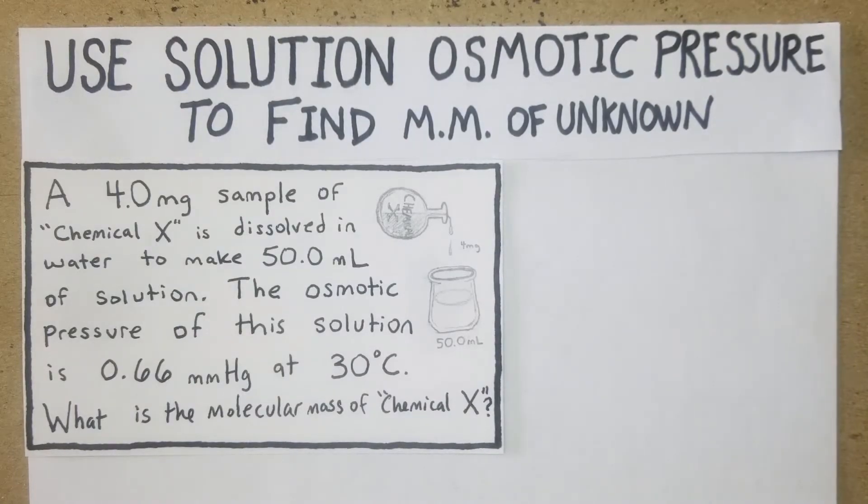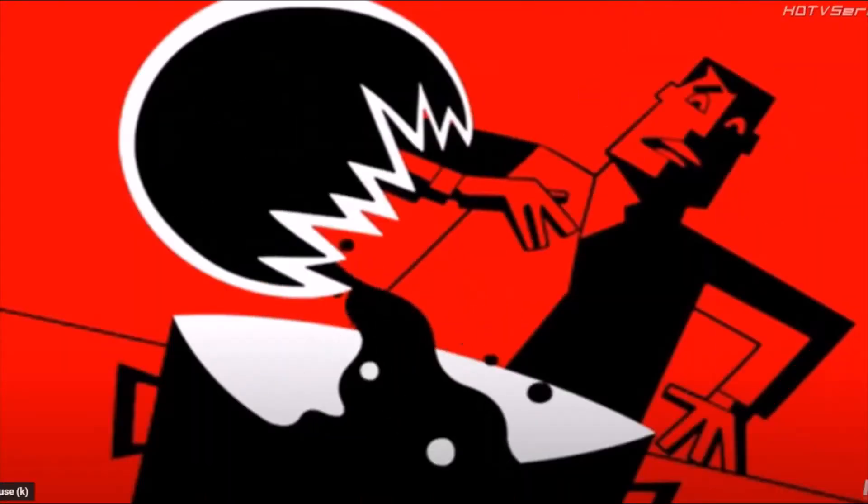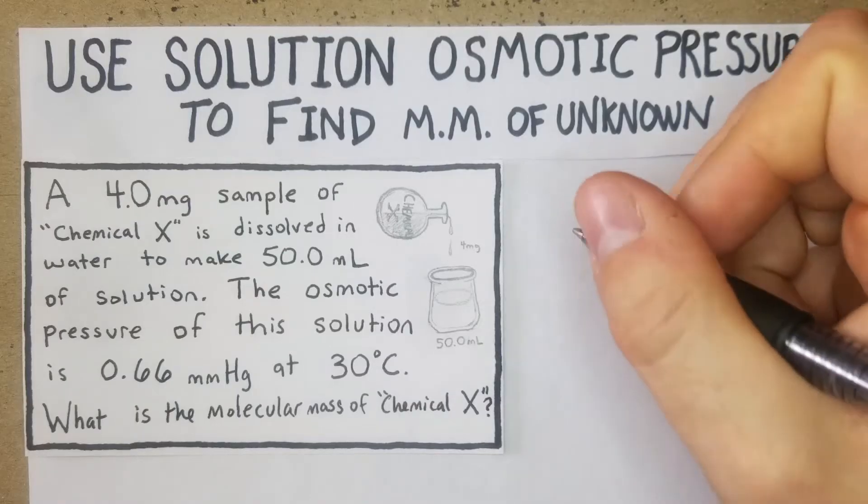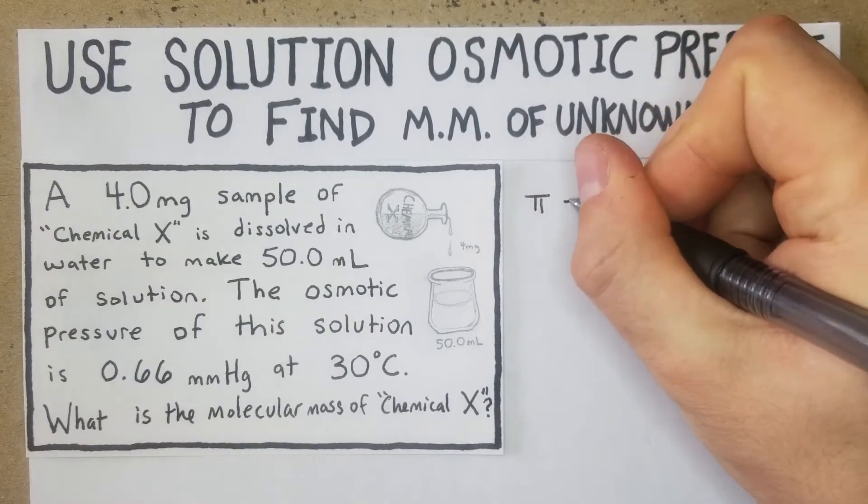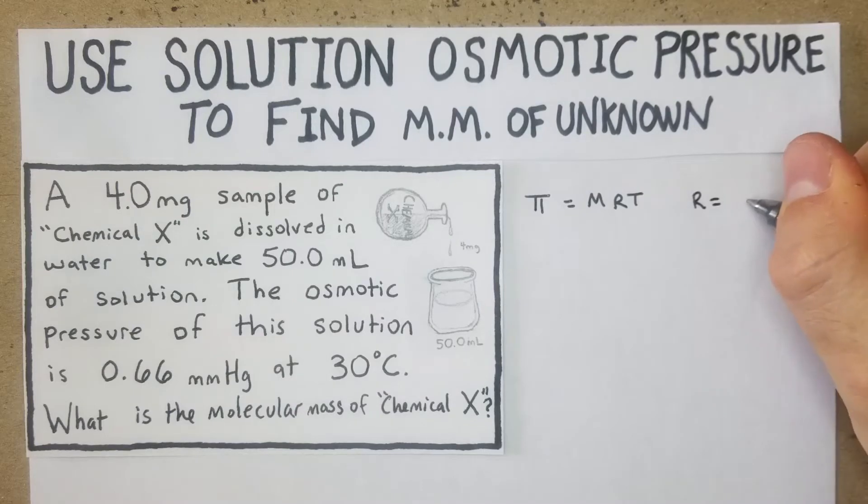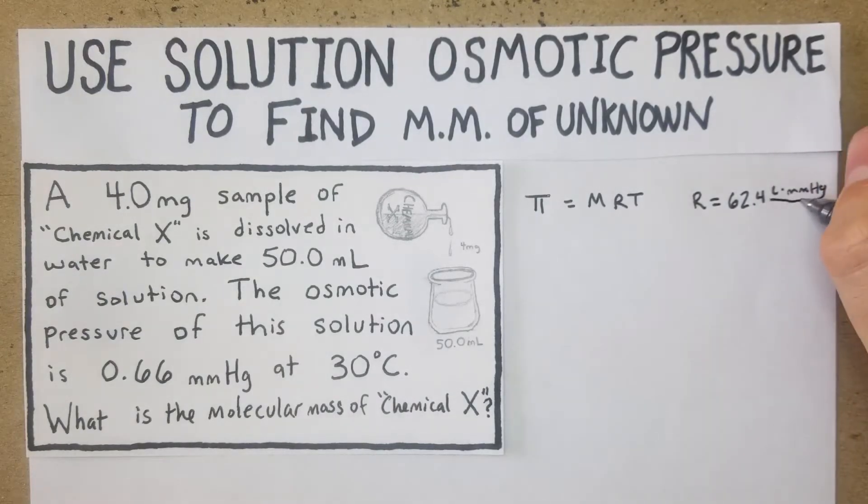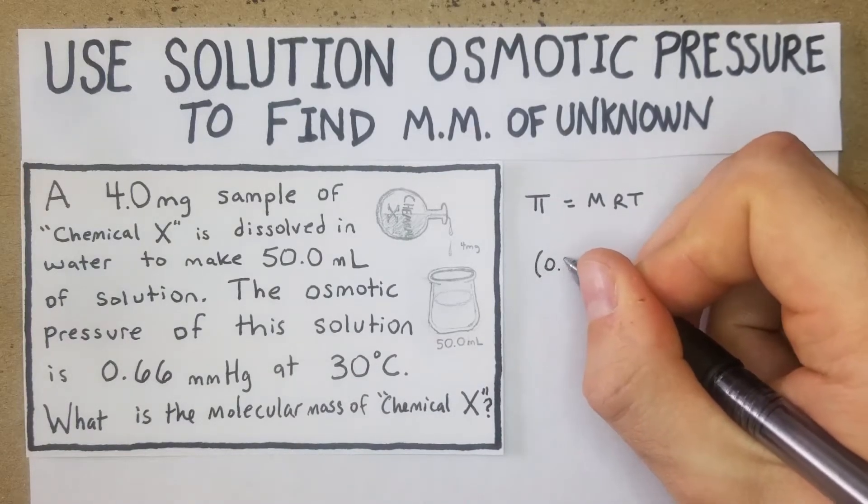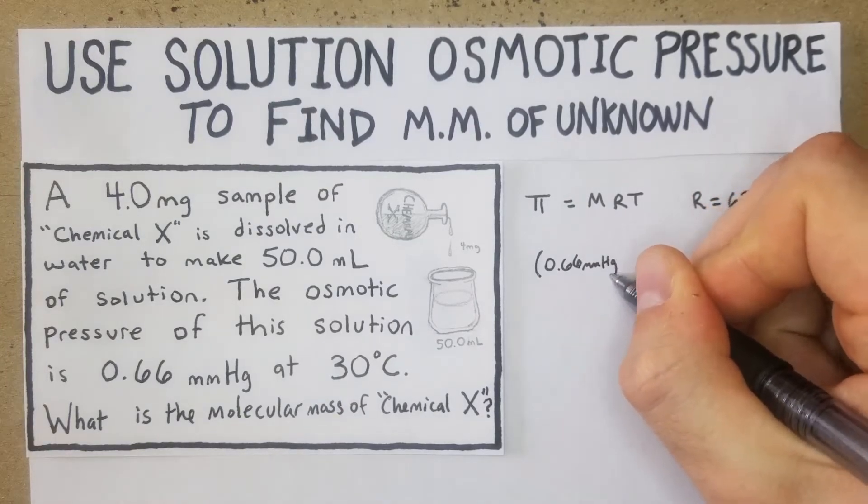First off, we're going to start by using this formula: π = MRT. Our R value is going to be 62.4 liters times mmHg over moles times Kelvin. Let's just start subbing in what we can. First off, 0.66 mmHg - we have our pressure there, and M is what we're going to be solving for.